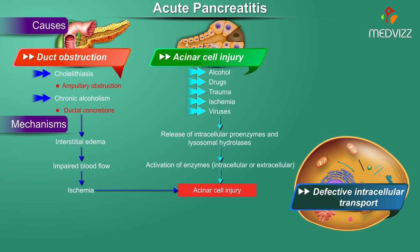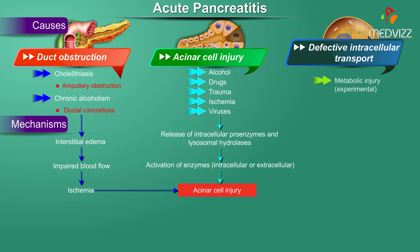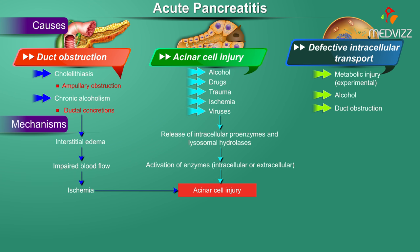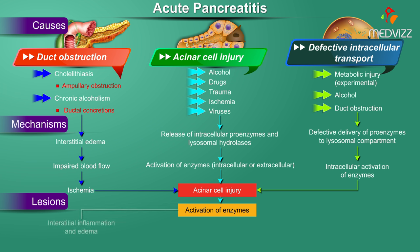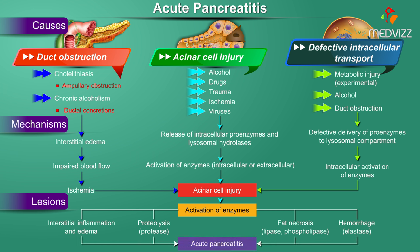A less common mechanism is defective intracellular transport. Metabolic injury, excess alcohol consumption, or duct obstruction can lead to defective delivery of proenzymes to the lysosomal compartment for hydrolysis, resulting in intracellular enzyme activation and acinar cell injury. When acinar cell injury occurs, it causes interstitial inflammation and edema, proteolysis, fat necrosis secondary to lipases and phospholipases, and hemorrhage due to release of elastase — all contributing to acute pancreatitis.